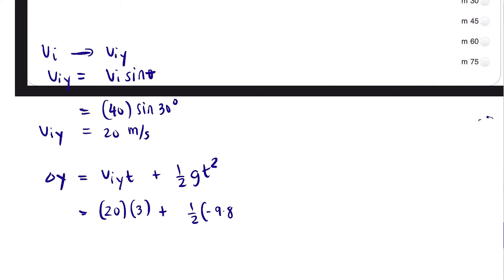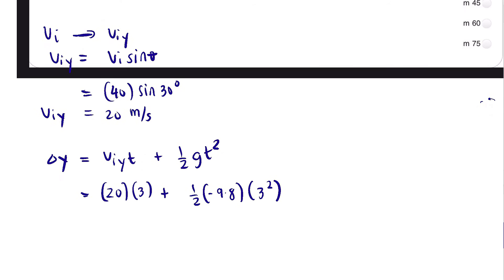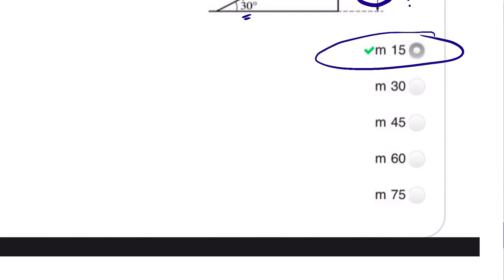When dealing with equations of motion, g should be negative 9.8, and our t is three seconds—don't forget to square it. This equals 15.9 meters, but the question asks for 'most nearly,' so we choose the closest answer, which is 15 meters.